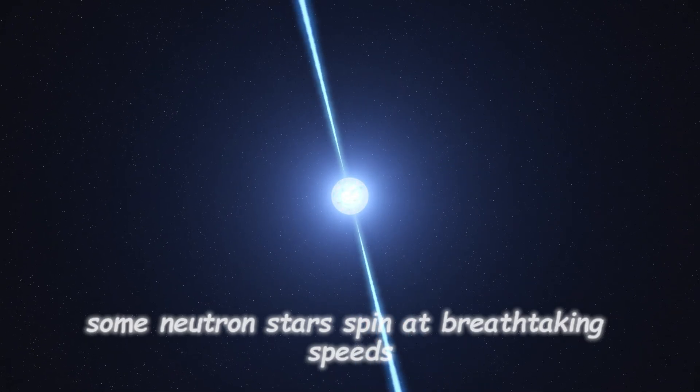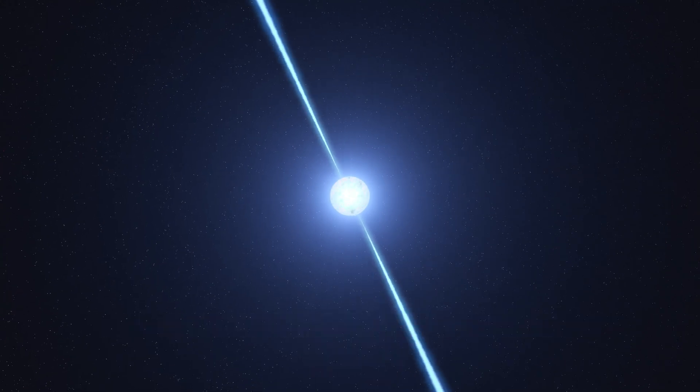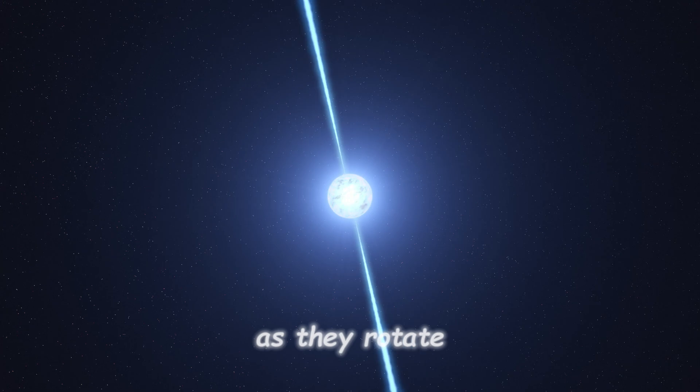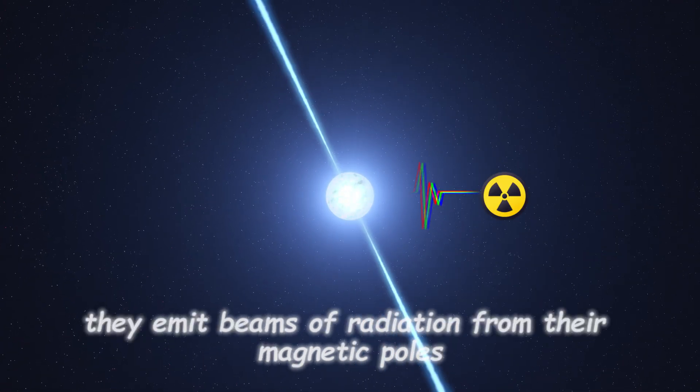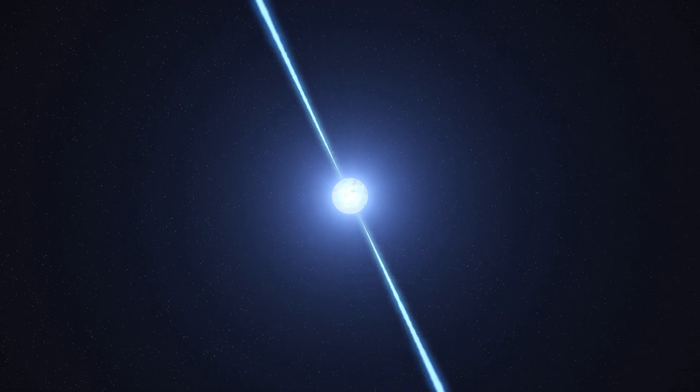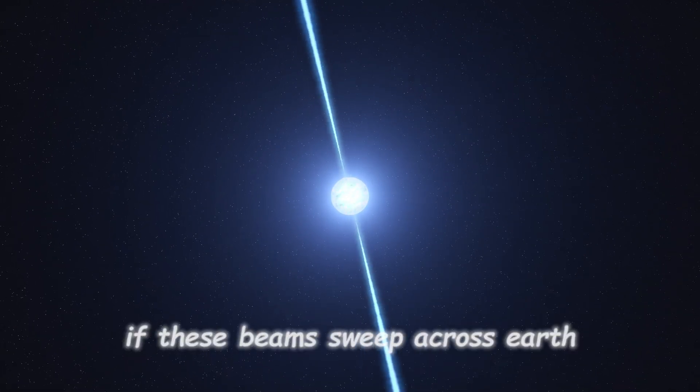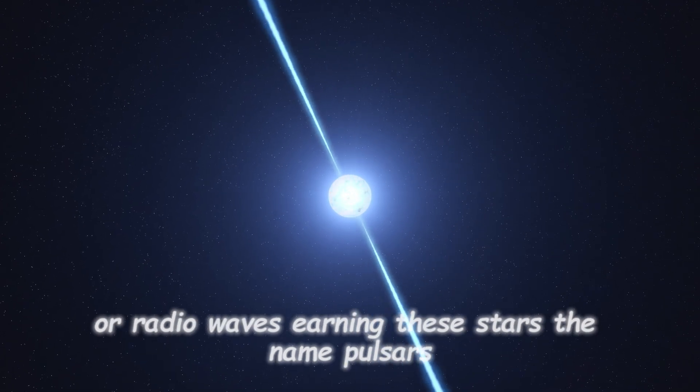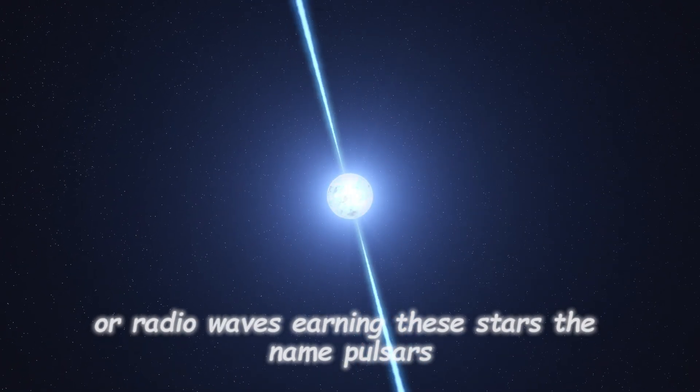Some neutron stars spin at breathtaking speeds, hundreds of times per second. As they rotate, they emit beams of radiation from their magnetic poles. If these beams sweep across Earth, we detect them as regular pulses of light or radio waves, earning these stars the name pulsars.